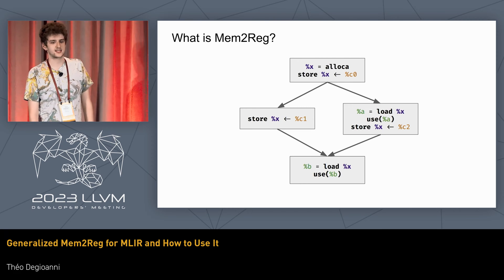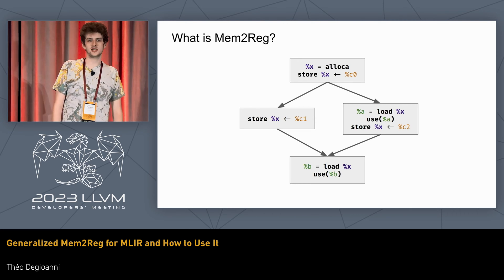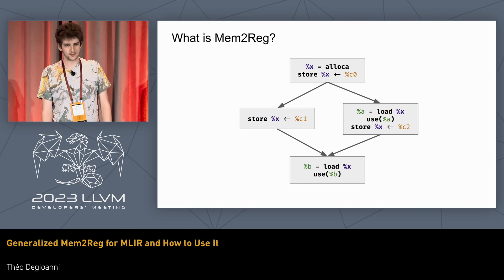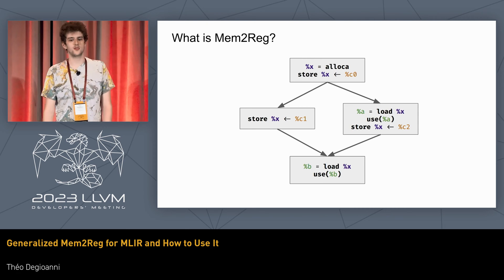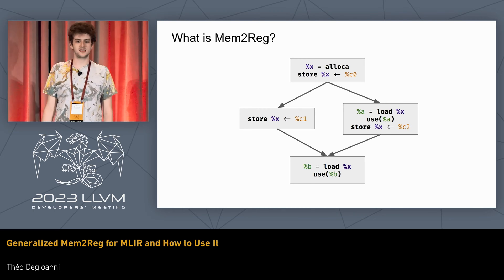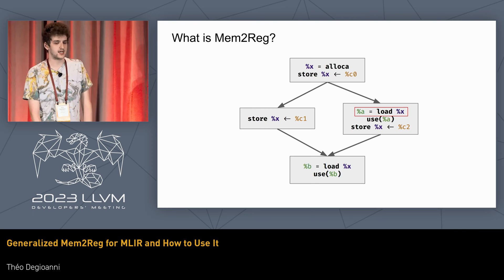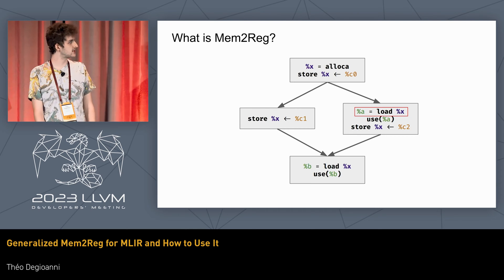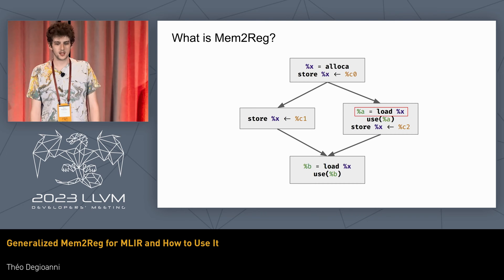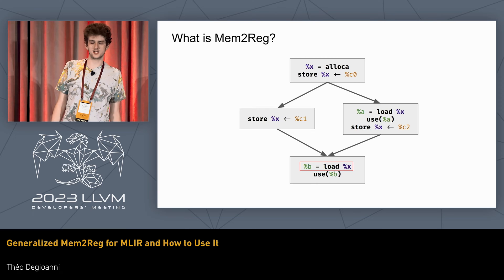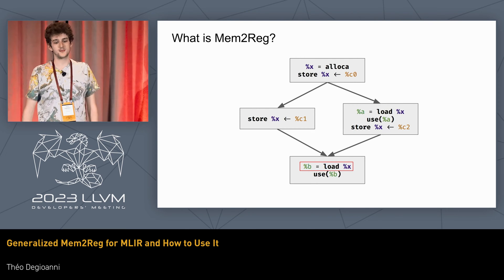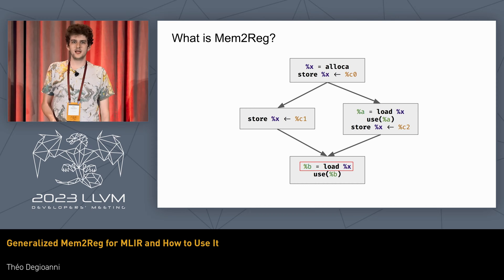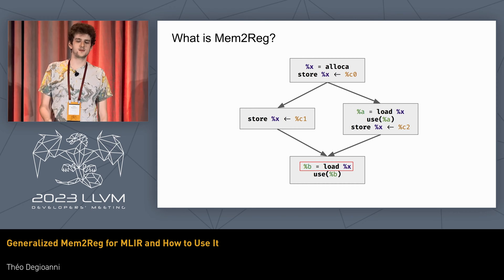Let's look at how this is done with this example. We've got an alloca X, which is a pointer to some value allocated on the stack. We have multiple operations that store to it and some that load from it. The point of Mem2Reg is to turn those loads and stores into direct uses of SSA variables. In some cases it's straightforward — the value of A will be C0 because it's the only store that reaches that point. But in other cases it's not as clear, because here it could be either C1 or C2 depending on which branch you're coming from. So the Mem2Reg algorithm has to clarify this before it can do any transformation.